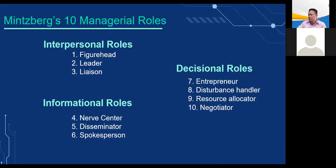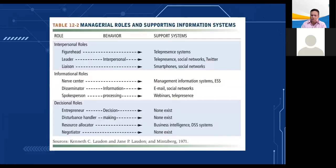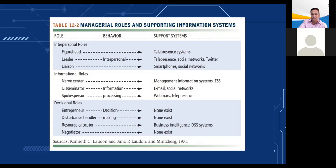In decisional roles, managers act as entrepreneurs by initiating new kinds of activities, they handle disturbances arising in the organization, allocate resources to staff members who need them, and negotiate conflicts and mediate between conflicting groups. The table shows that information systems are now capable of supporting most but not all areas of management life. For example, under interpersonal roles, the figurehead and leader roles are supported by telepresence systems, social networks, and Twitter.